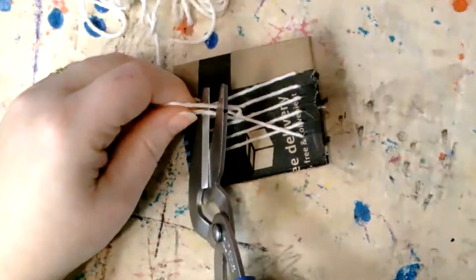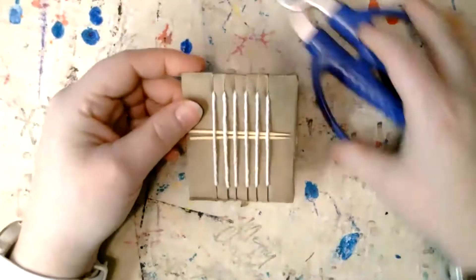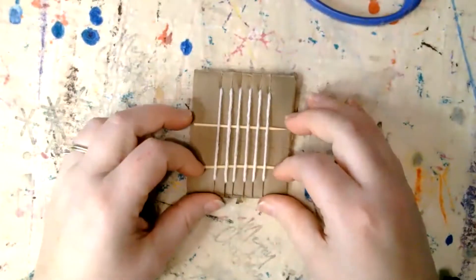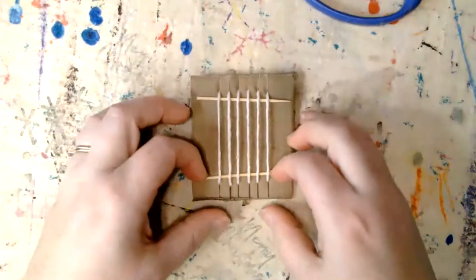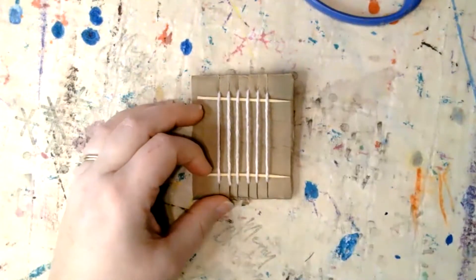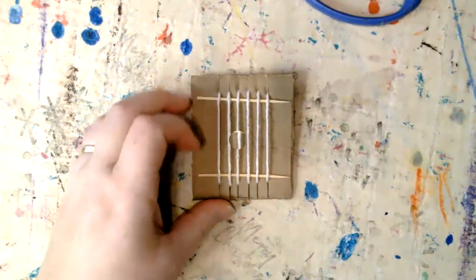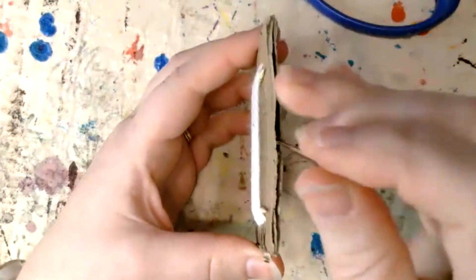Get that out of the way, and then you will slide your toothpicks down to either edge. What that does is give you room to weave. If you'll notice, there's a space right here that I've created with these toothpicks.